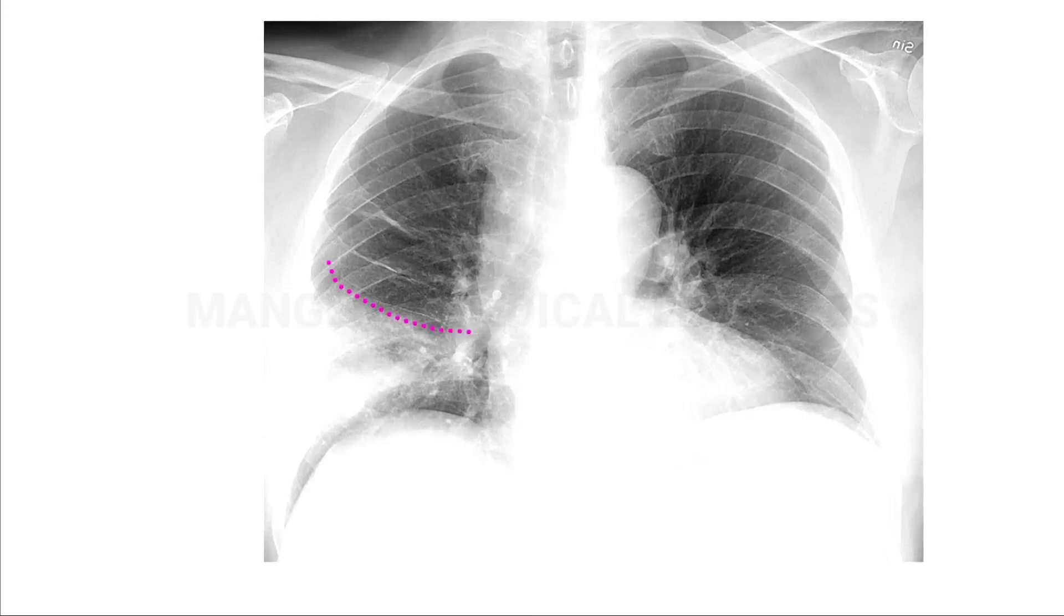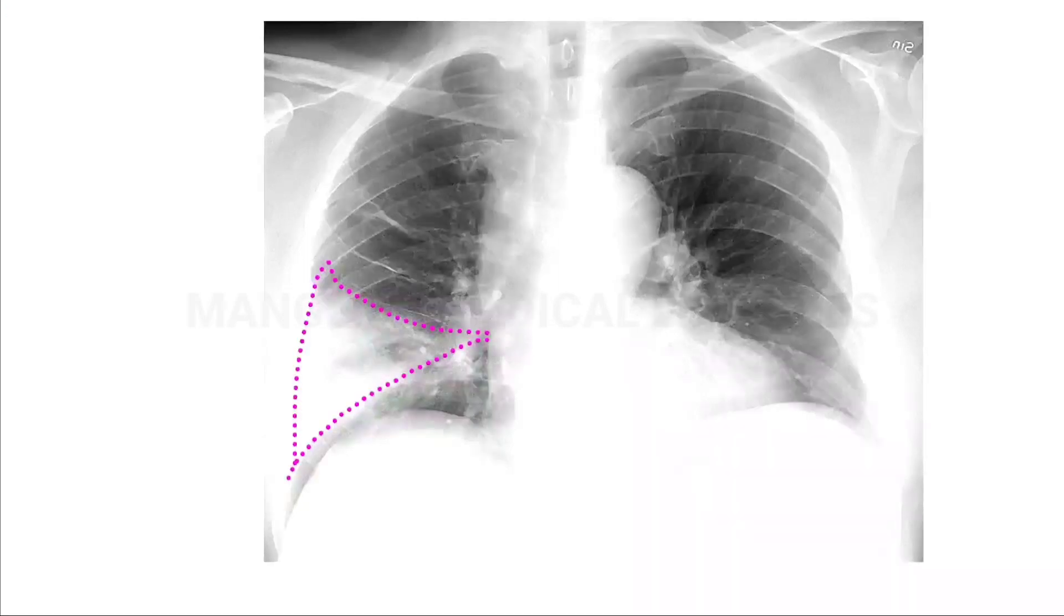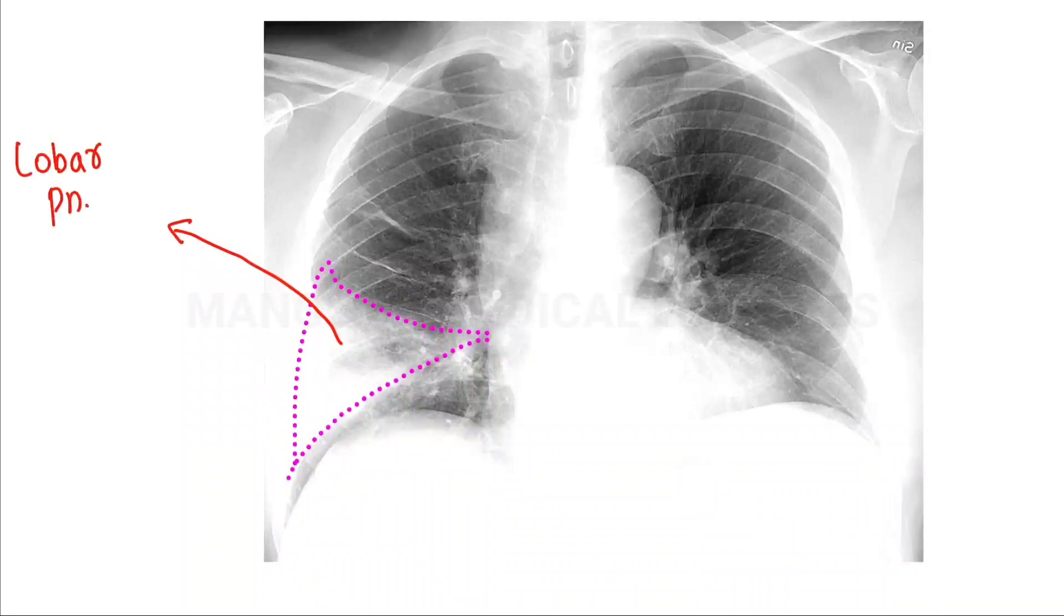In the X-ray, you can see the lobe—it is most likely to be lobar pneumonia. You can see the patch or consolidation in the shape of a lobe. That white color is actually consolidation.